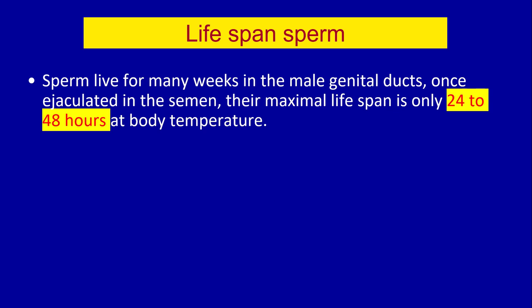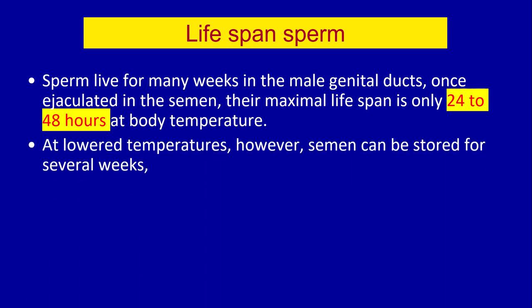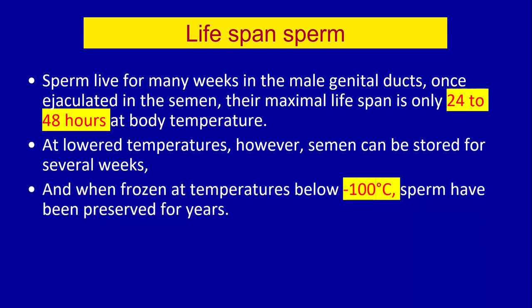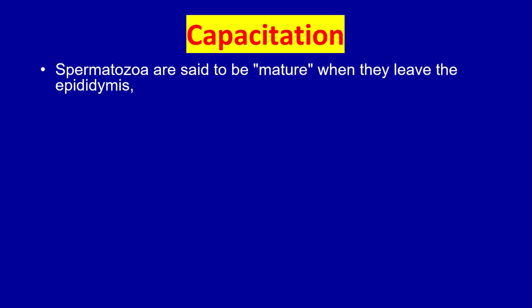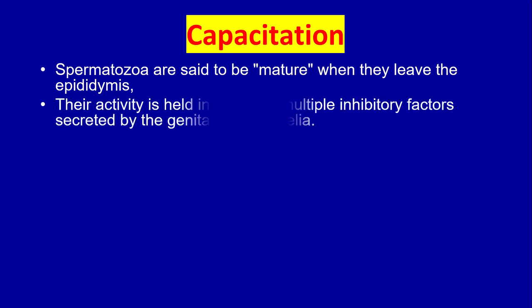Sperm live for many weeks in the male genital tract. Once ejaculated, their maximal lifespan is only 24 to 48 hours at body temperature. At lower temperatures, semen can be stored for several weeks, and when frozen at temperatures below minus 100 degrees centigrade, some sperm have been preserved for years.